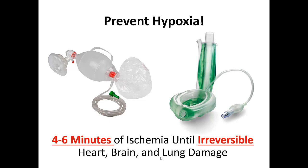Our next most important priority is excellent airway skills. It only takes four to six minutes of tissues not getting enough oxygen until there can be irreversible heart, brain, or lung damage. In our severely injured trauma patients, they already have a lot of underlying damage to their organs. Providing supplemental oxygen helps support those vital organs and decreases mortality. If you don't think they're breathing effectively, help them with a bag valve mask. If they're unconscious and unresponsive, attempt to use an LMA — whatever it takes to quickly address that airway and prevent hypoxia.